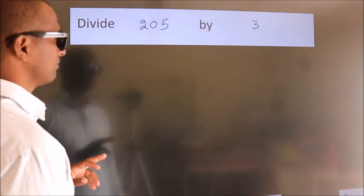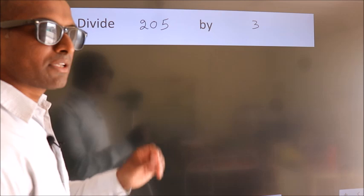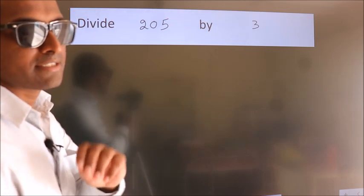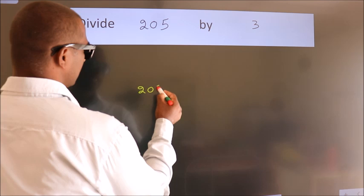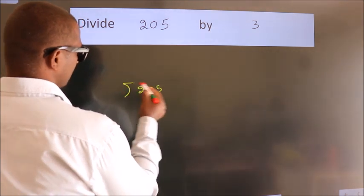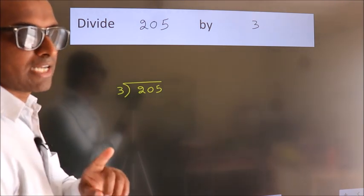Divide 205 by 3. To do this division, we should frame it in this way. 205 here, 3 here. This is your step 1.